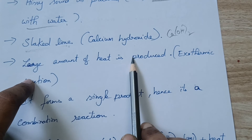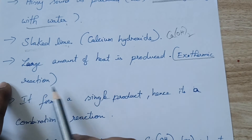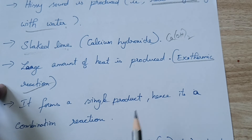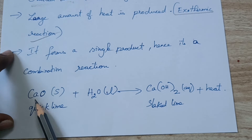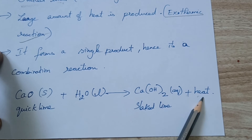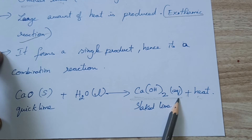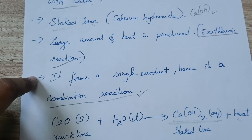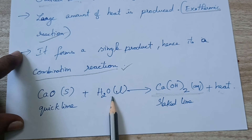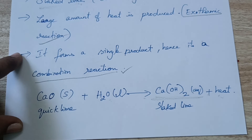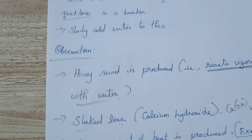If heat is produced in the reaction, then it is called an exothermic reaction — just as we learned. Also, when calcium oxide reacts with water, it forms only one product — calcium hydroxide, which is slaked lime, plus heat. Since two reactants combine to form one single product, it is an example of a combination reaction.